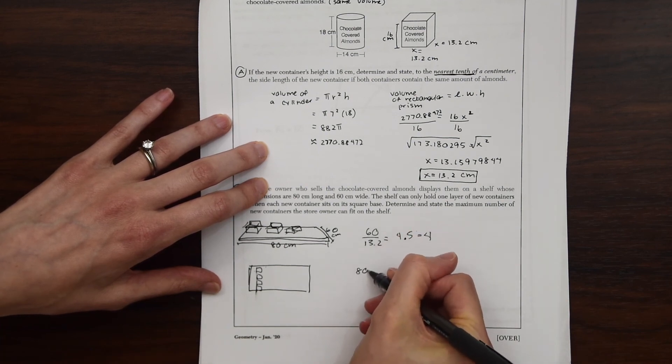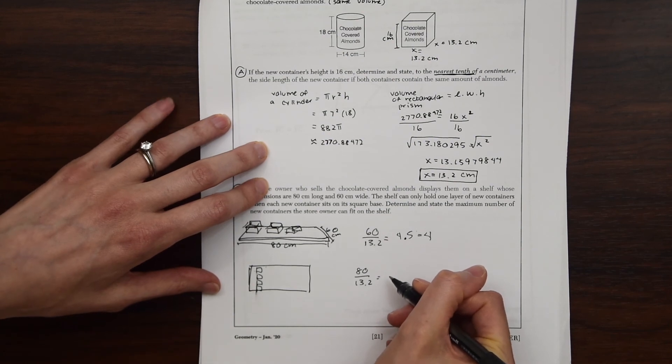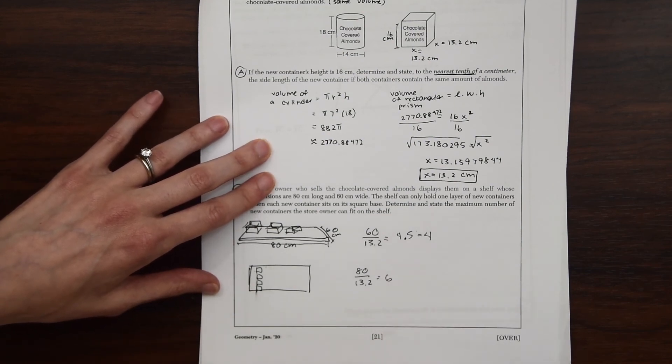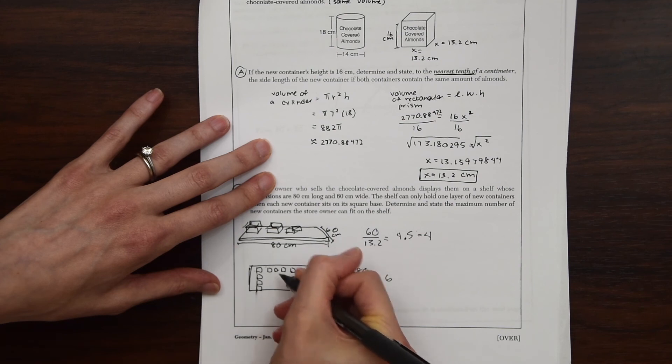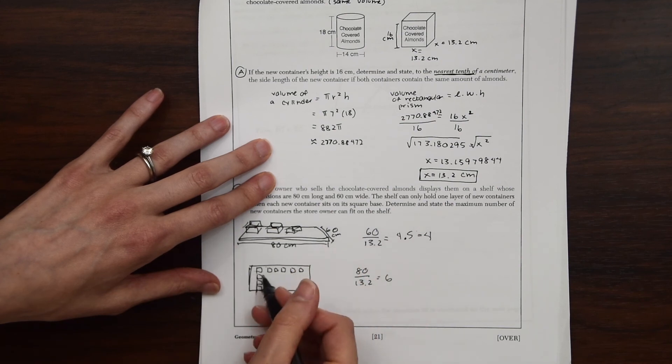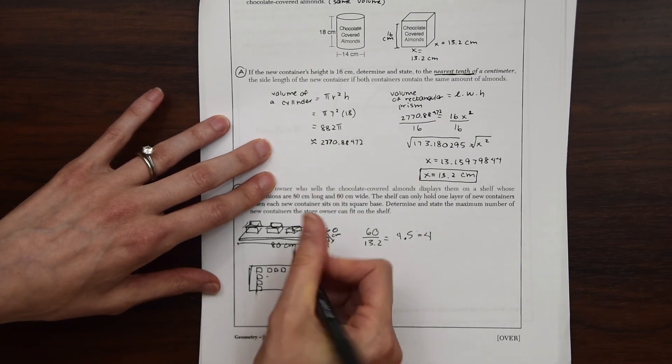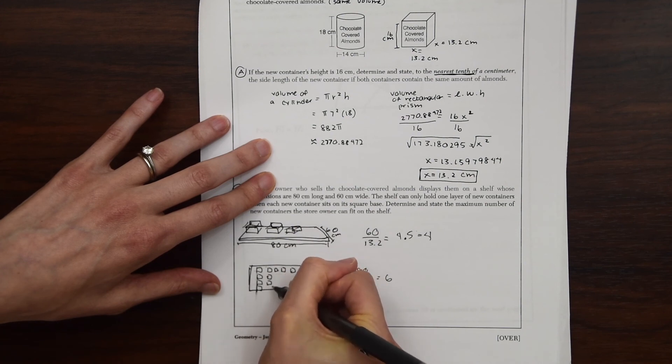And if we do 80 centimeters divided by 13.2, we're going to get 6 almost perfectly. So that means we can have 6 of these columns. So 1, 2, 3, 4, 5, 6. And then, of course, each one of those can have 4 in each line.